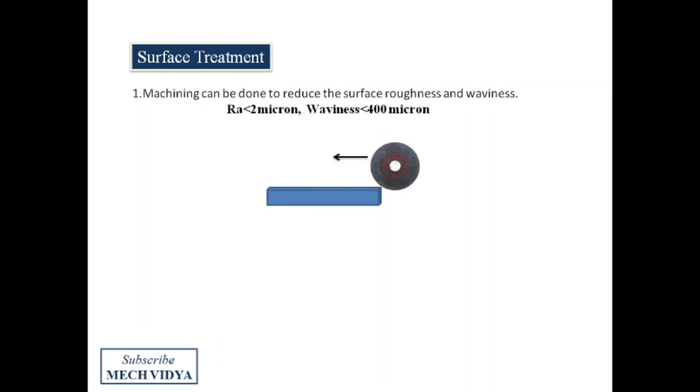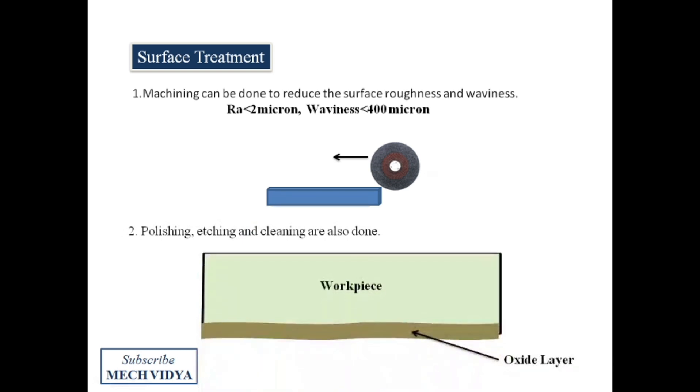Machining can be done to remove a very fine layer from the surface to make the surface smooth. Also, polishing, etching, cleaning, and similar processes can also be done to clean the surface from any oxide contamination or impurities.